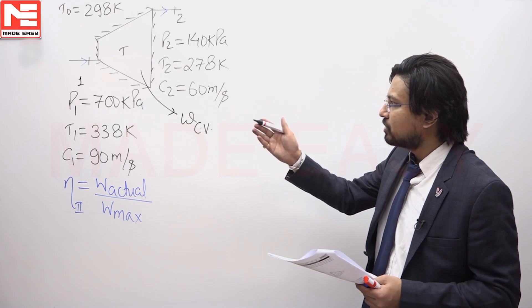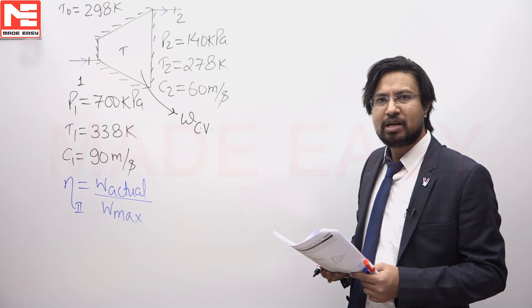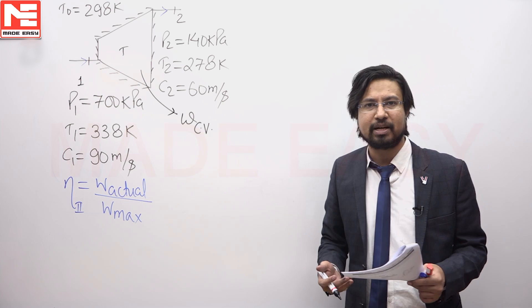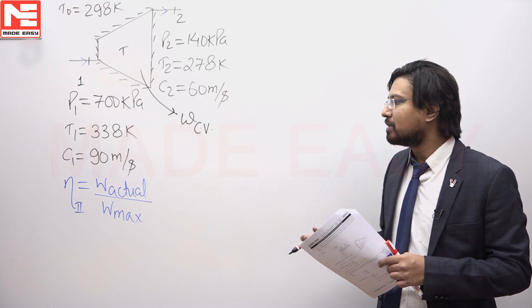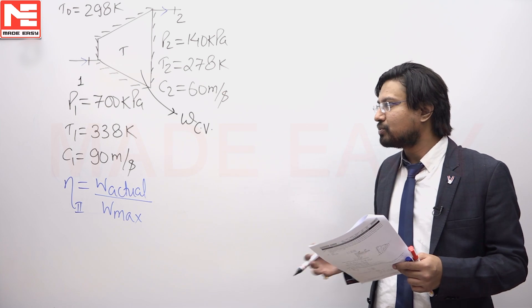A turbine has been shown to us. The mass is entering, mass is exiting, conditions are given to us. Second law efficiency is the actual work developed by the device upon the maximum possible which could have been possible in the given situation.